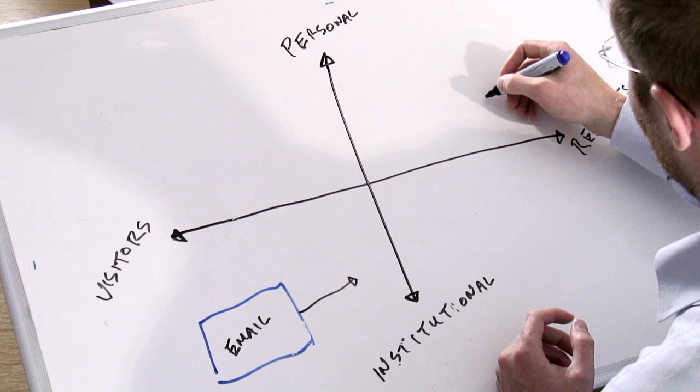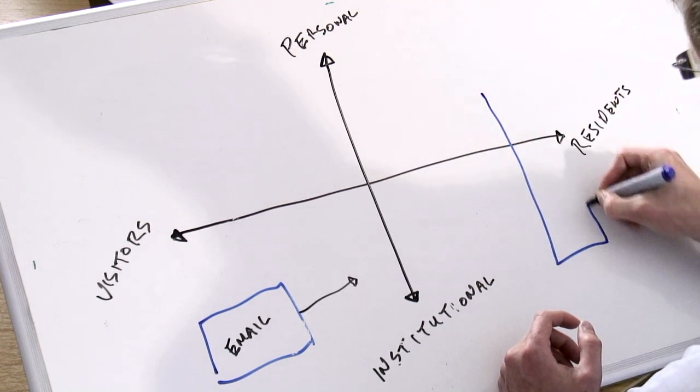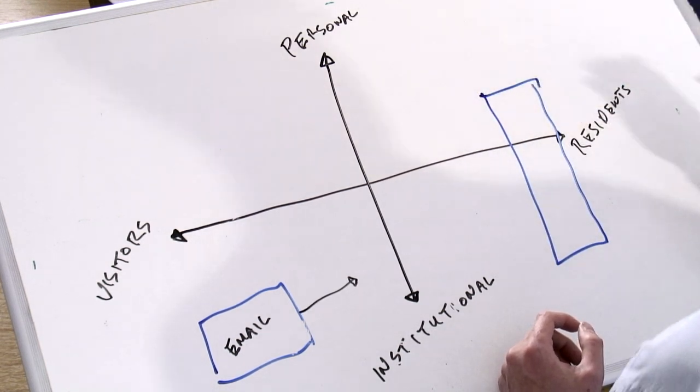So let's go to the other end of the spectrum then. And the technology or the platform or the place, if you like, that I'm most resident in, that if you want to find me online, then this is the place to come looking for me, is Twitter. And that maps to around about here. Now the actual size and the shape of these blocks and exactly where you put them aren't too important.